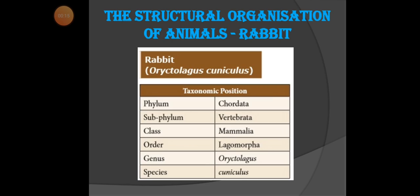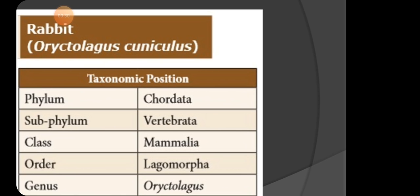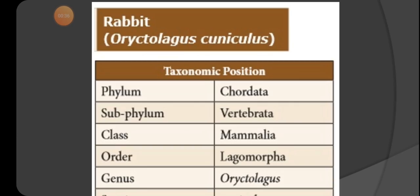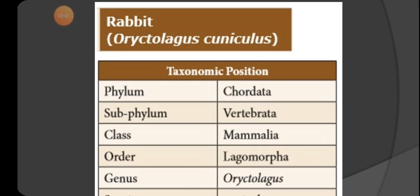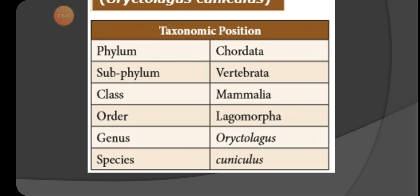Good morning students. We are studying about the structural organization of animals. We already learned about leeches, and now we have to see about the rabbit. The zoological or scientific name of rabbit is Oryctolagus cuniculus. In taxonomical studies, we should know its classification.